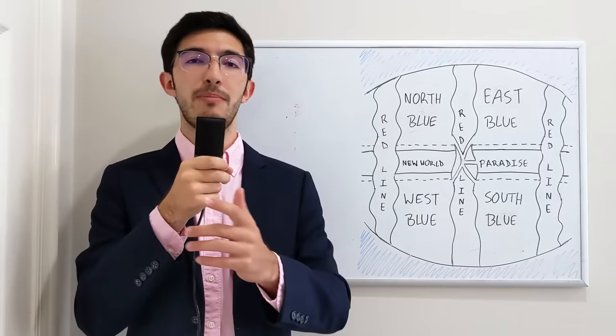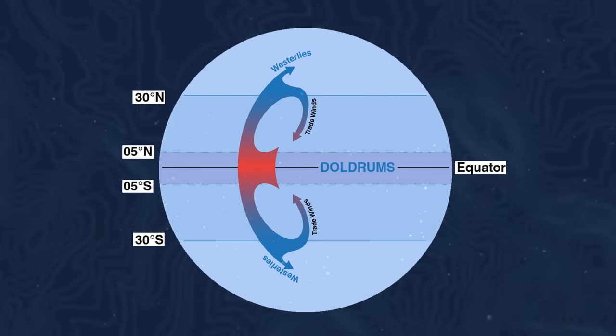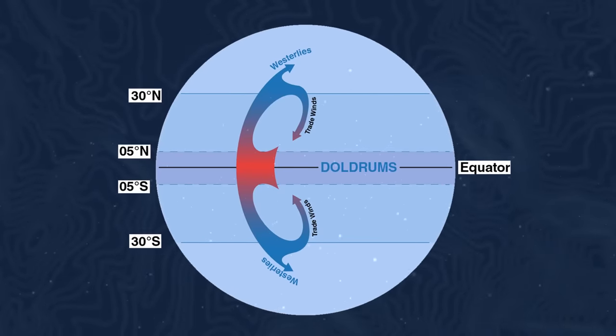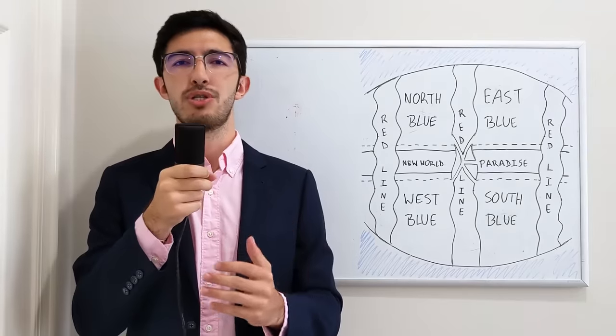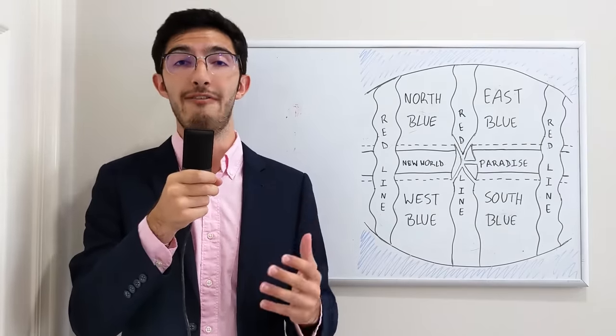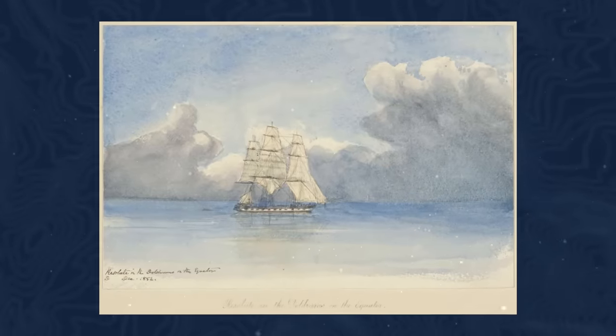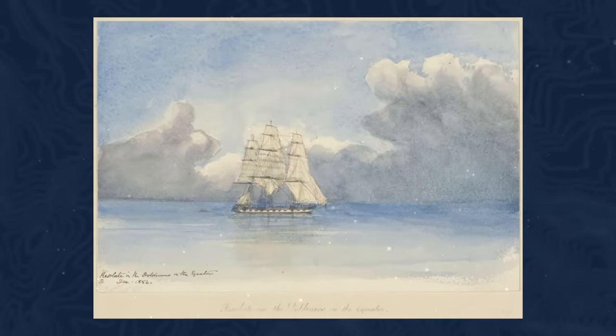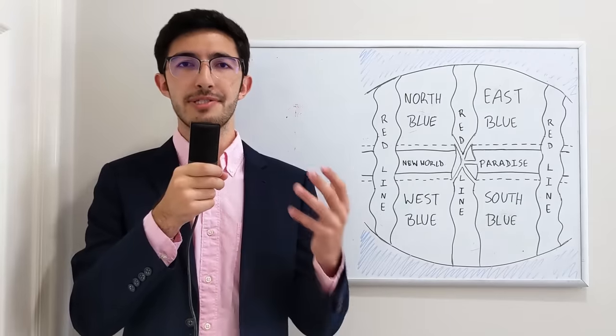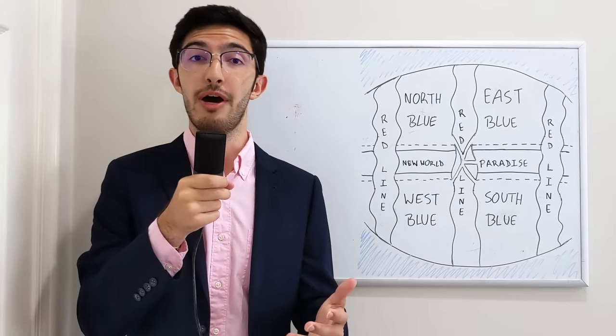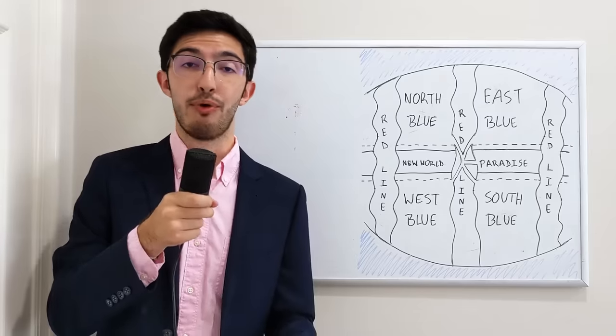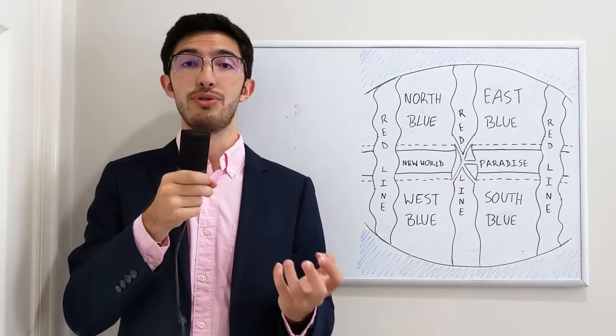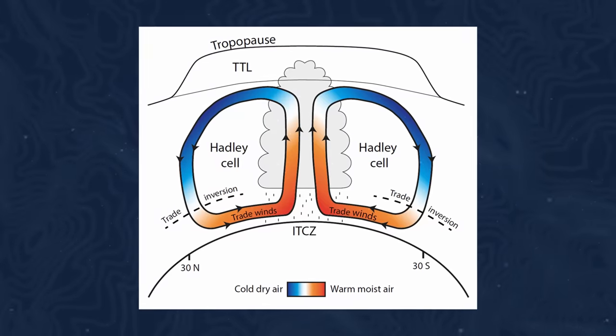Now, the doldrums are a stretch of ocean that pretty much encapsulates the equator in maybe like 5 or 6 degrees north or south from there, and it is a stretch of ocean that sailors have long known to have generally windless waters and are therefore very hard to traverse. Now, the way this works is that because the tropics receive so much sunlight on average year-round, that means that you have a lot of evaporation from the ocean, which then results in warm, moist air.